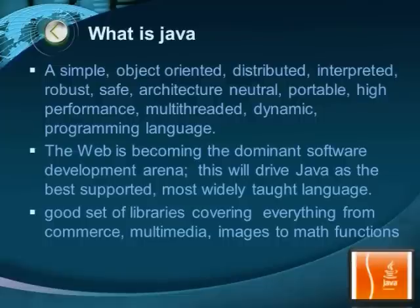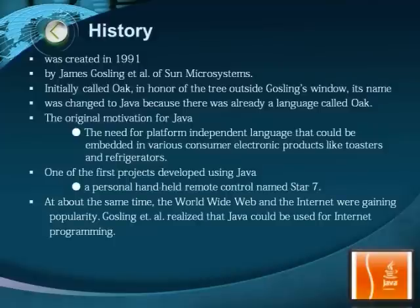Java is a simple, object-oriented, distributed, interpreted, robust, safe, architecture-neutral, portable, high-performance, multi-threaded, and dynamic programming language. Java was developed in the early 1990s at Sun Microsystems as a platform-independent language aimed at allowing entertainment appliances such as video game consoles and VCRs to communicate.